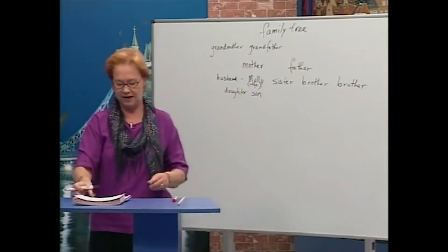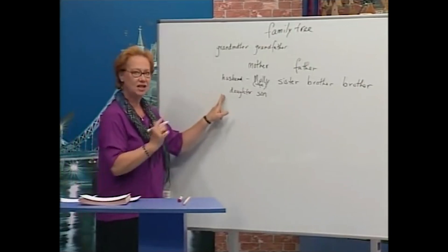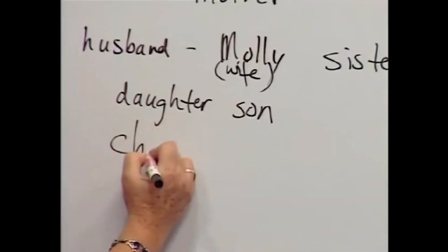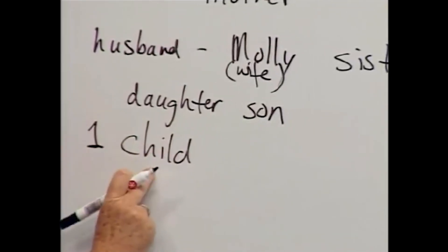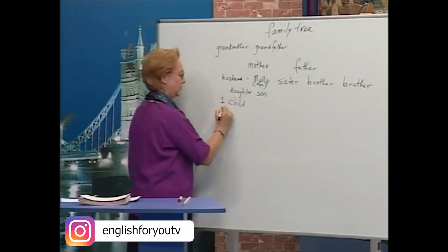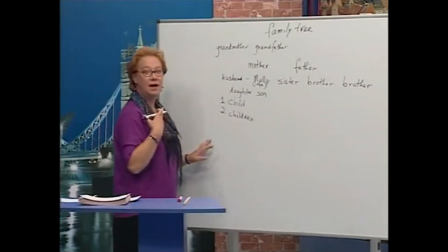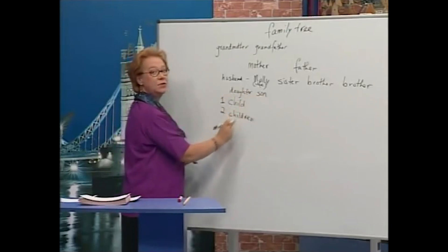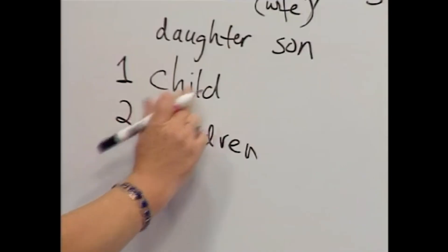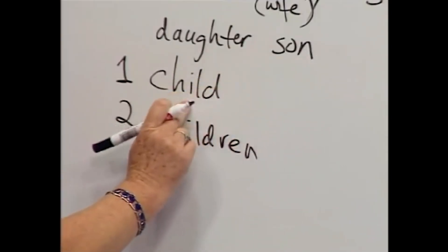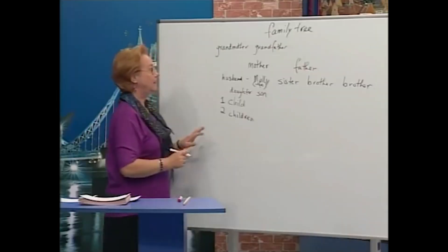Now, who else do we have in this family? We have child — one child, two children. So, I have two children. My daughter is one child. My son is one child. My daughter and son are two children.